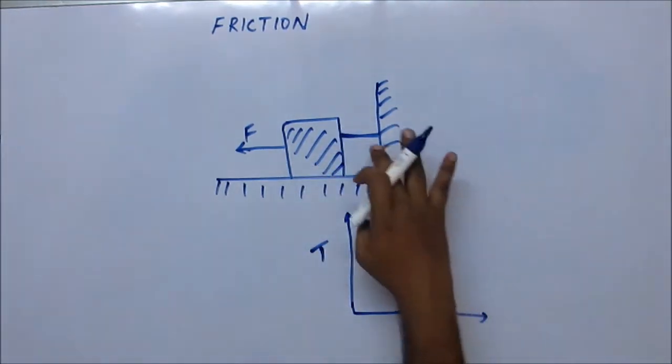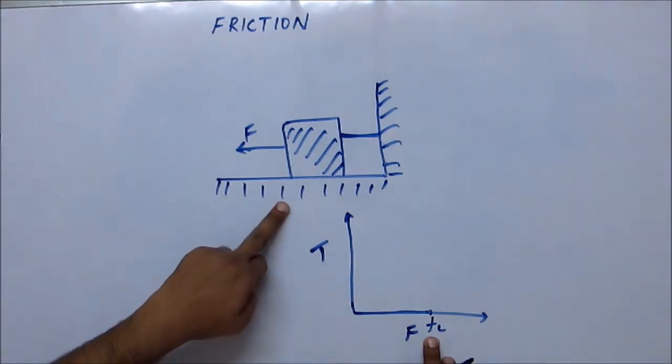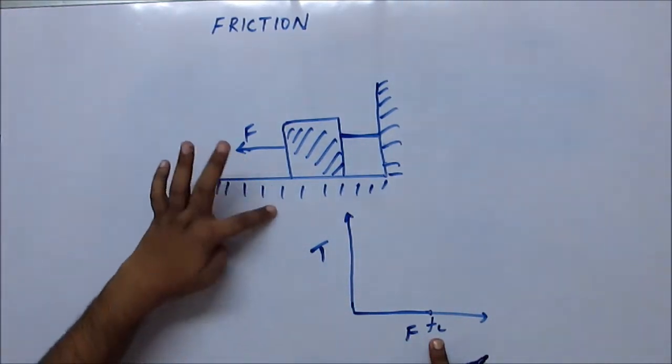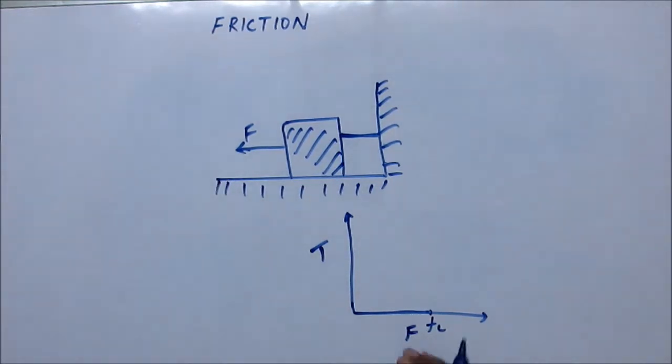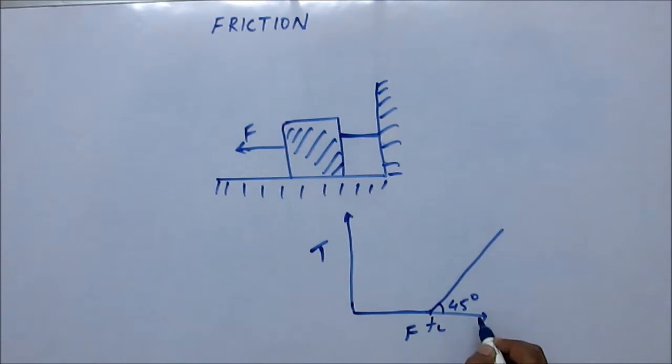After that, as you increase the force, it's still not going to move, considering that the string is not going to break. There is a limit on the value of friction. After that, whatever force you apply has to be balanced by tension. After this point, the increment in external force will be equal to the increment in tension.